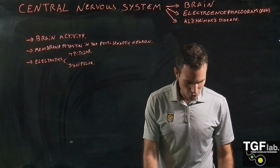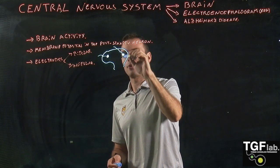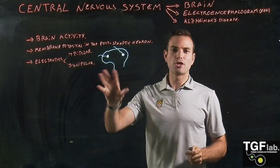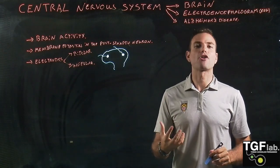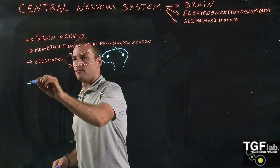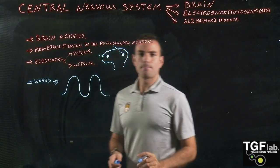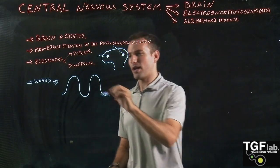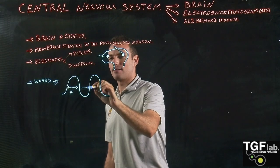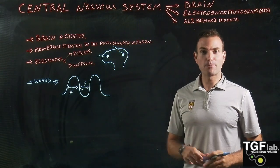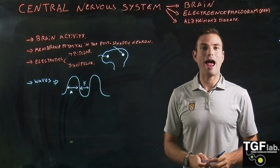These electrodes are going to be placed in different parts of our brain. Here we have one electrode, and here we have another electrode. What these electrodes are going to measure are waves, or neural waves. In a brain wave, we have two different concepts that are important: the first one is the amplitude — how big these waves are — and the second is the frequency, which is how many waves per second we are going to have. These two parameters, amplitude and frequency, are very important to determine the different types of waves that we have in our brain.